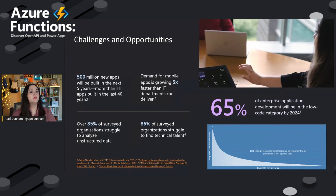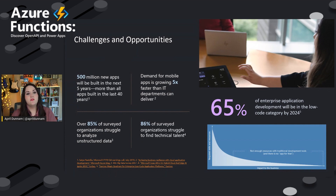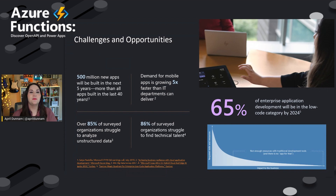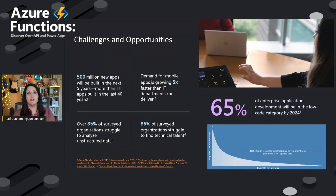To level set here, I want to talk about the current landscape we have for application development. We have a couple of unique challenges and also opportunities from those challenges. One of the things we're seeing now is just an overwhelming demand for new application development. Estimates are about 500 million new applications are going to be built in the next five years, which is more than all the apps built in the last four years — an astronomical demand. That's about five times faster than what currently can be delivered by IT departments, and about 80% of organizations are saying they're struggling to find technical talent to build these applications.